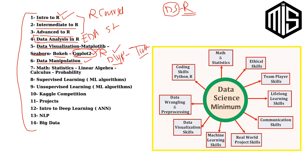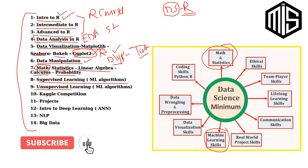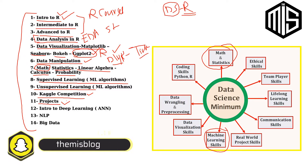Since data science involves math and statistics, the track should give me statistics in R, linear algebra in R, calculus in R, and probability in R — essentially math courses in R. And since data science is about machine learning, it should cover supervised learning algorithms in R like classification, decision trees, logistic regression, and linear regression, as well as unsupervised learning like clustering and k-means.